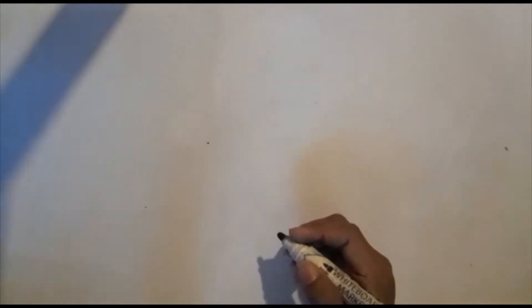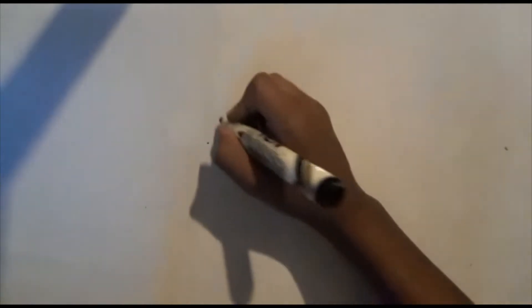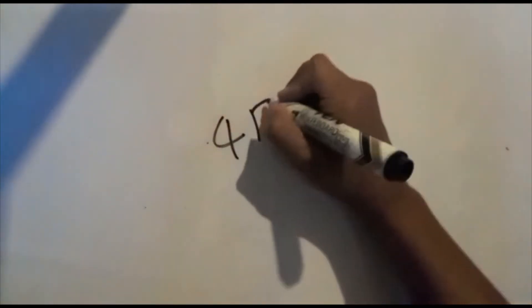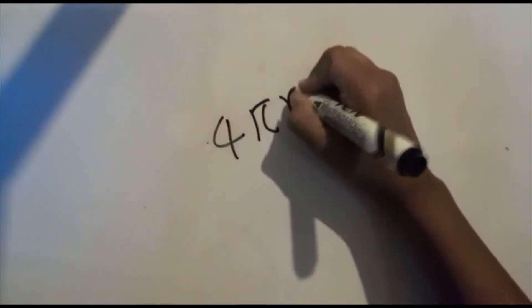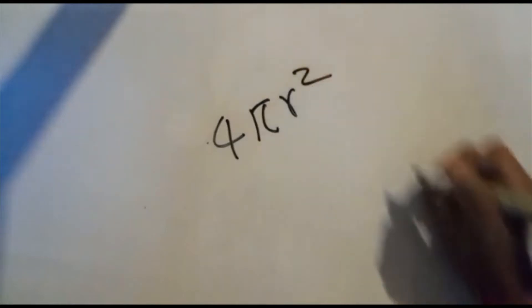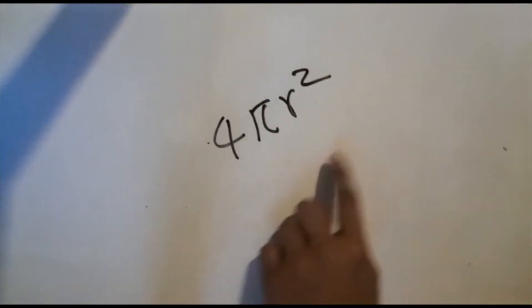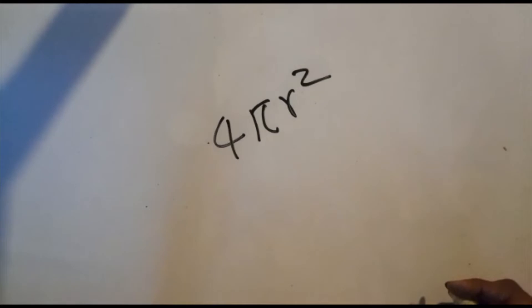Hello guys, I am Yithi Kaya. Welcome to my YouTube channel. Today I am going to derive the formula 4 pi r squared. 4 pi r squared gives you the surface area of a sphere. Before you watch this video, make sure to subscribe and hit the like button.